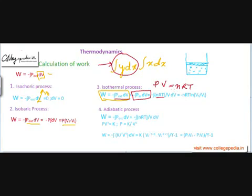Now, pV = nRT is an ideal gas law, applicable for gas. Inside the system I have an ideal gas, so the pressure inside can be given by pV = nRT. The pressure outside cannot be given by this expression because outside I don't have an ideal gas. So pV = nRT is applicable only for the system, meaning I can replace only p_internal with nRT/V.